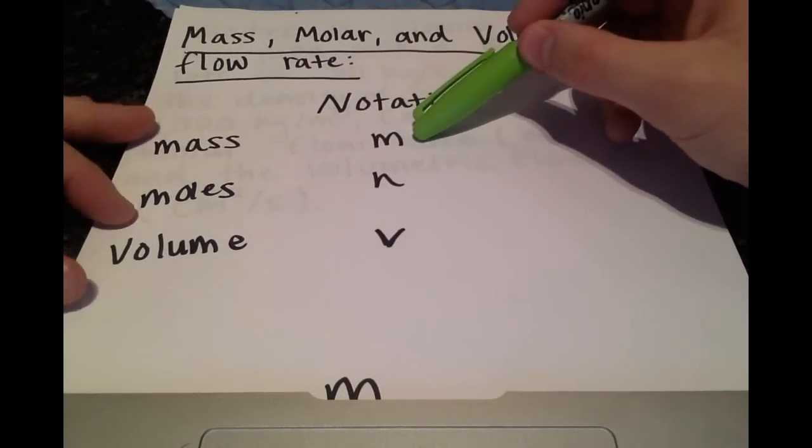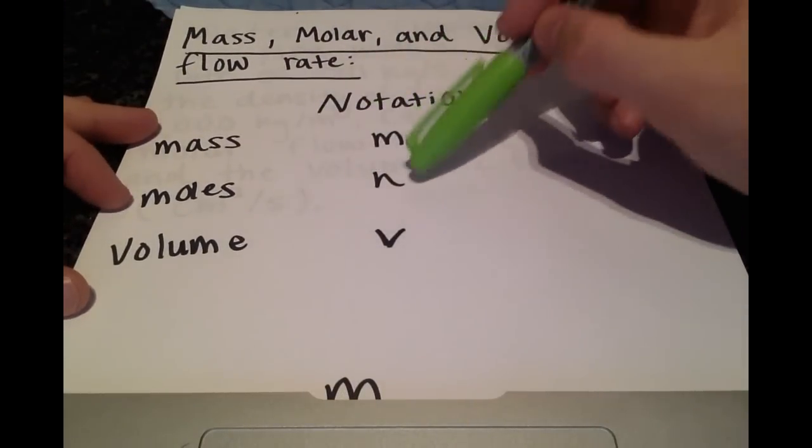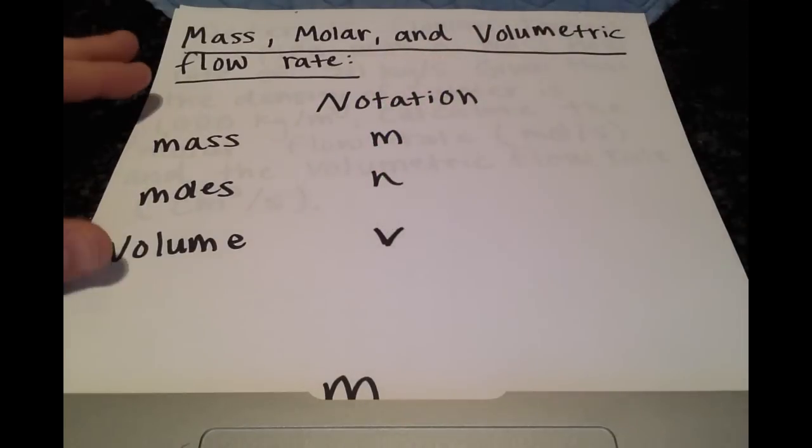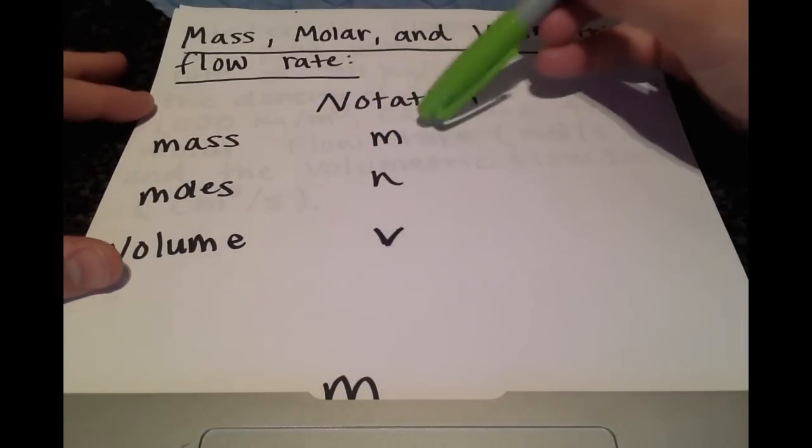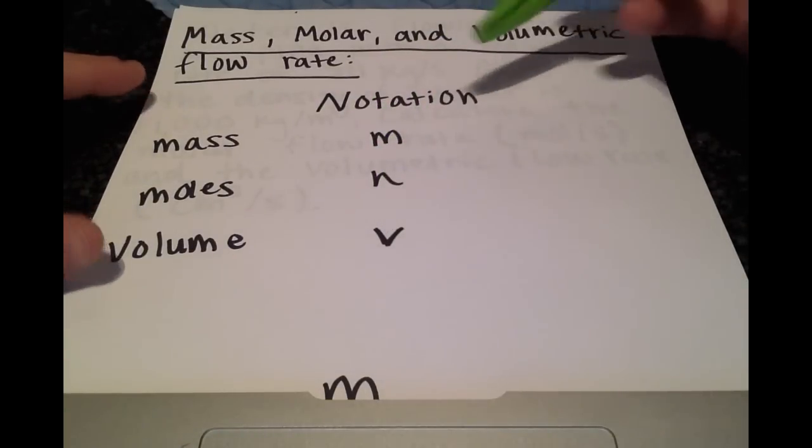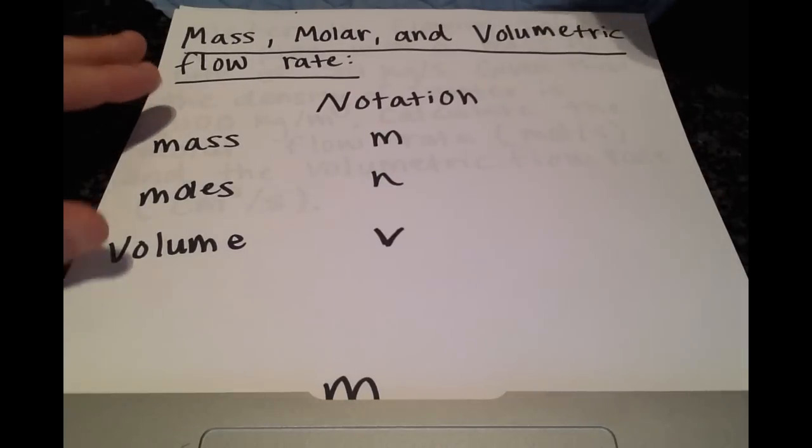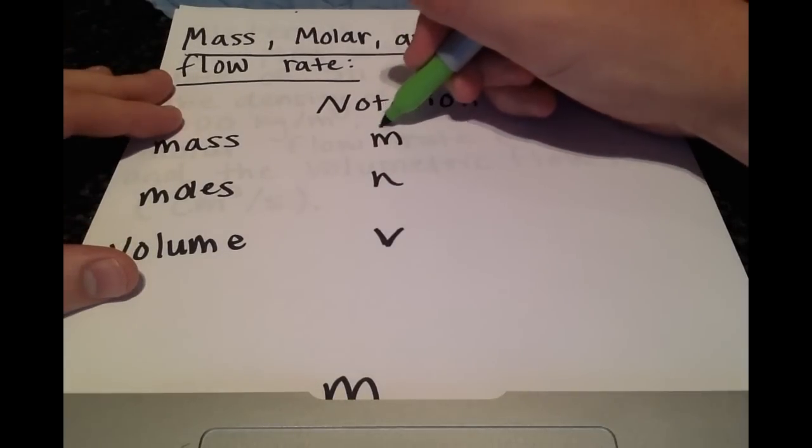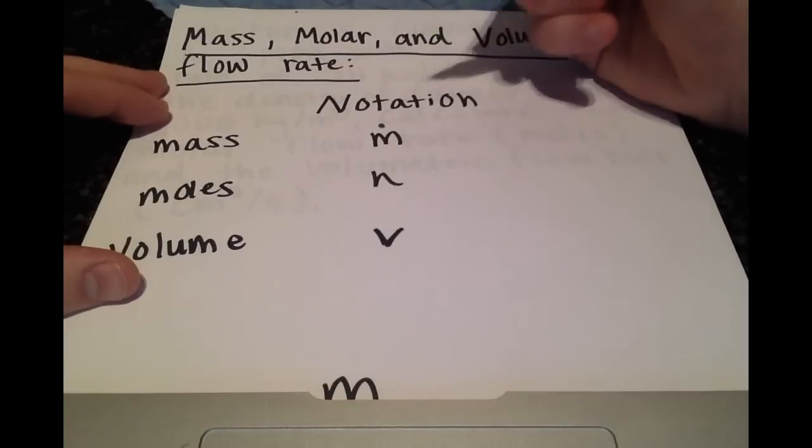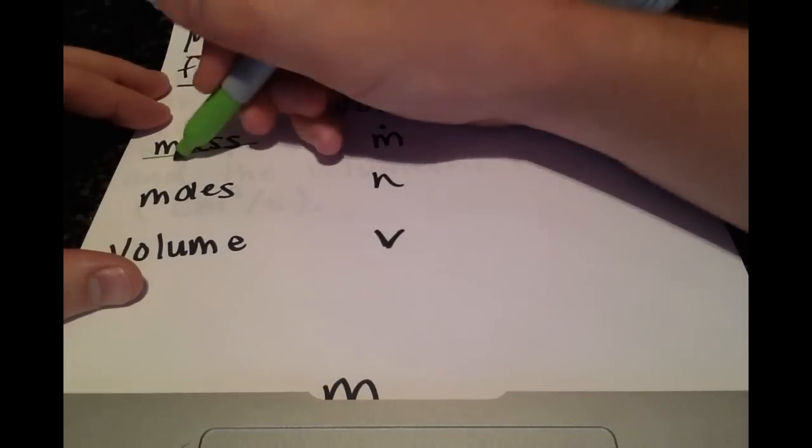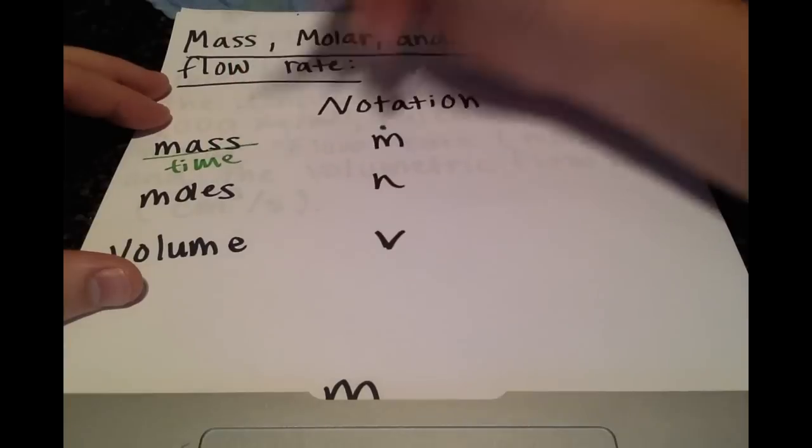Mass is just M, moles is N, volume is V. So how do we show that each of these is flowing in a pipe or something of the like? As soon as you add a dot over the unit, it means now we're adding a time component.